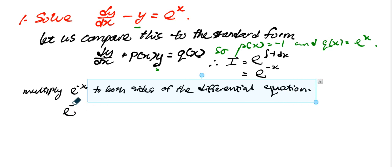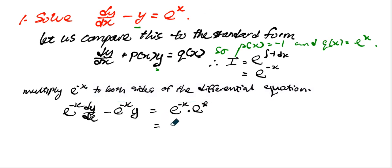So what we have is that e to the power of negative x dy/dx minus e to the power of negative x y equal to e to the power of negative x times e to the power of x. You can see that the right-hand side is nothing more than 1.